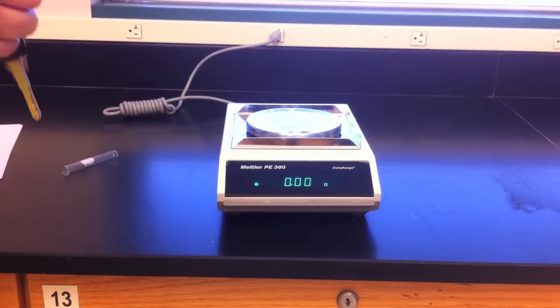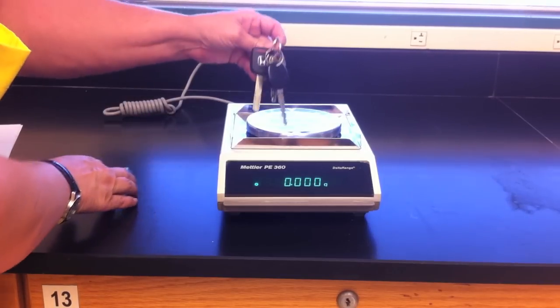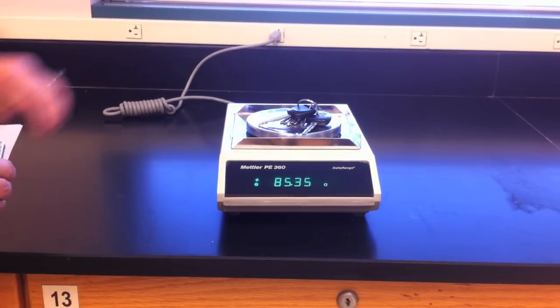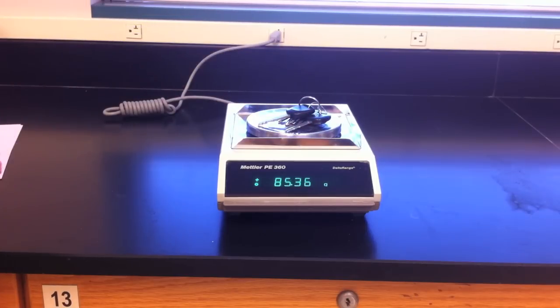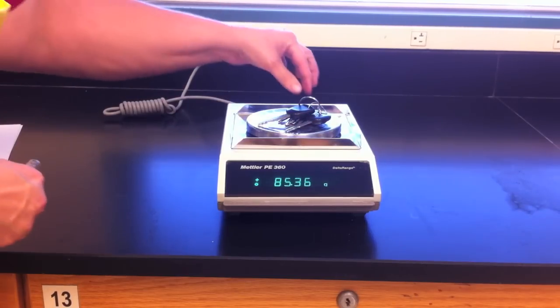For practice you can weigh a variety of objects to see how their mass changes depending upon the size that they have, such as keys, test tubes, cell phones, whatever you have.